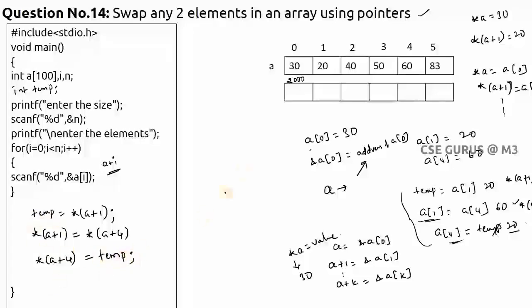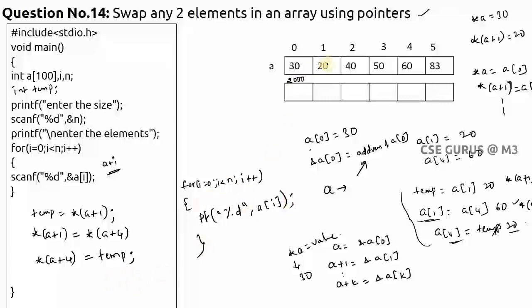After the swap, print the array with a for loop: for(i=0; i<n; i++) print a[i]. You will see a[1] now has 60 and a[4] has 20. If you want, you can also create a separate pointer variable: int *p; p = a; then use *(p+1) = *(p+4) with temp. But without a separate pointer variable, it works directly — that's why arrays are one type of pointer.